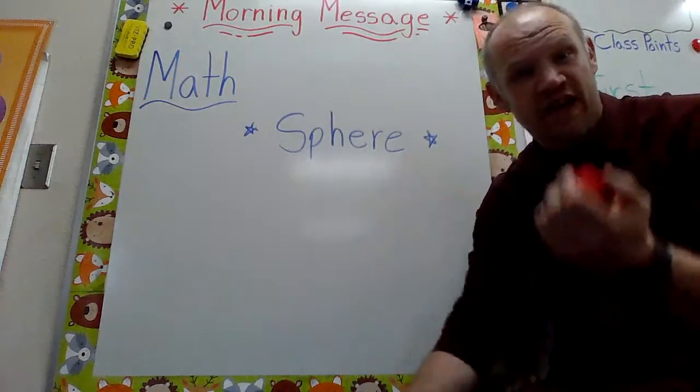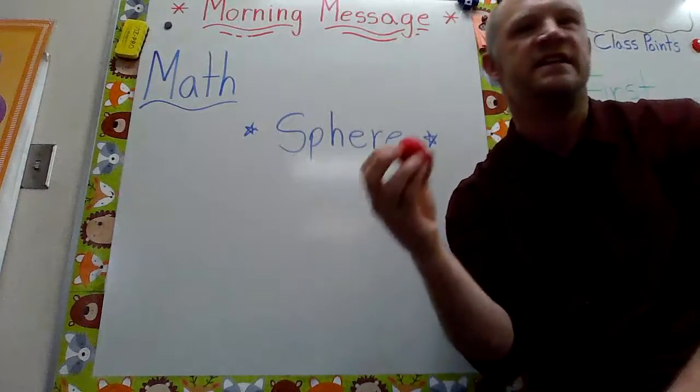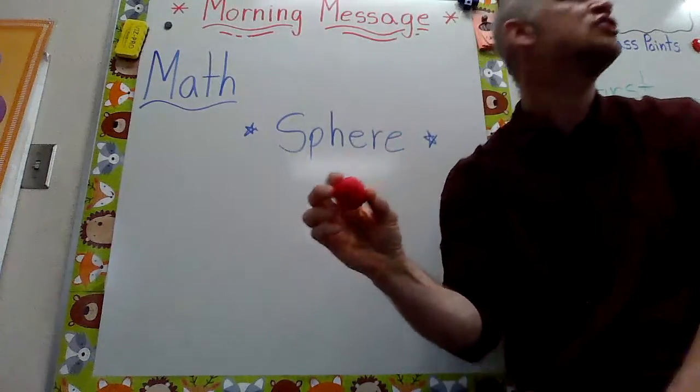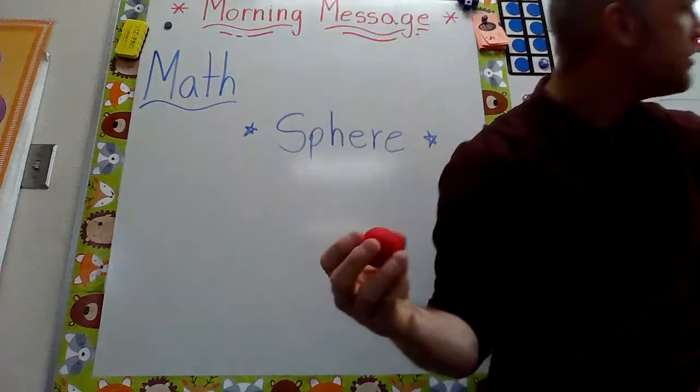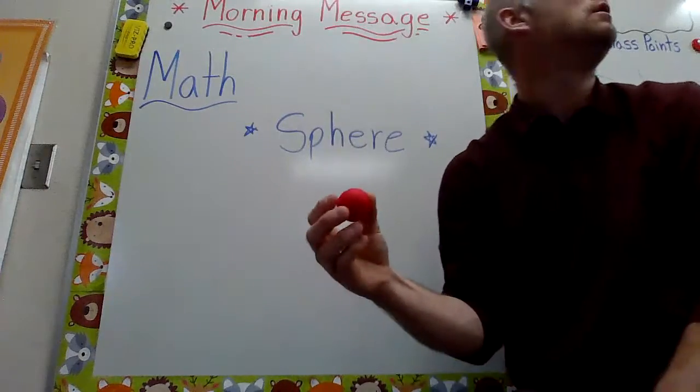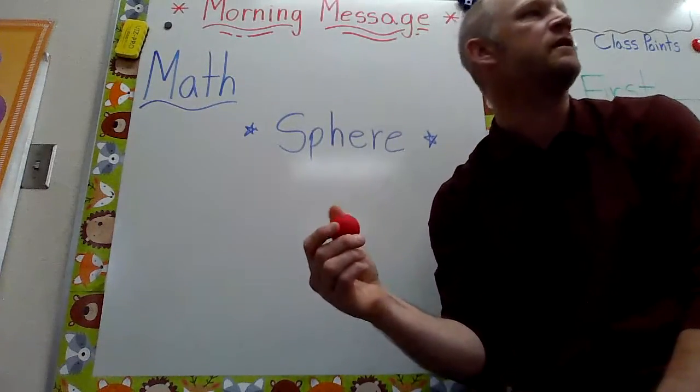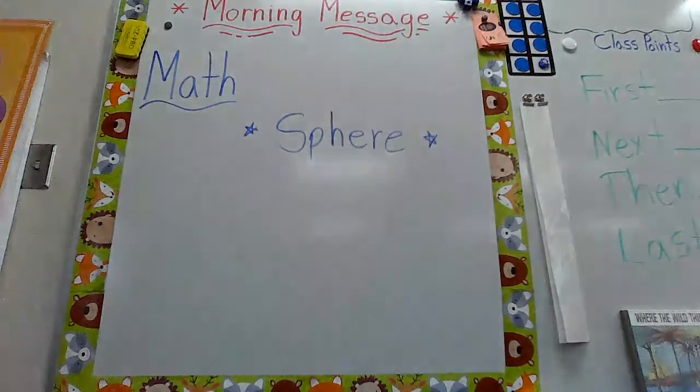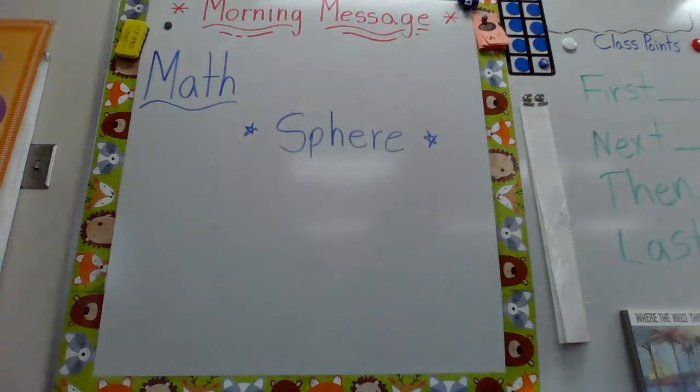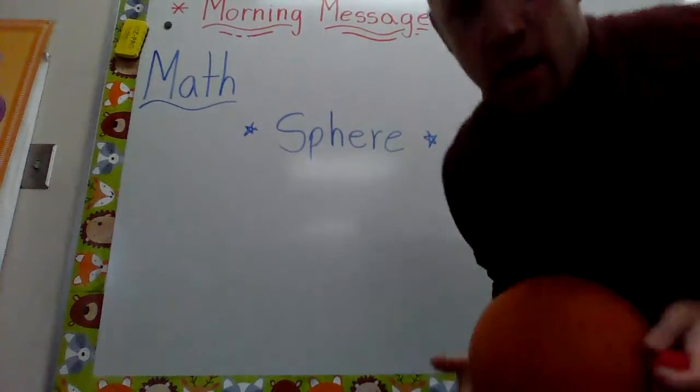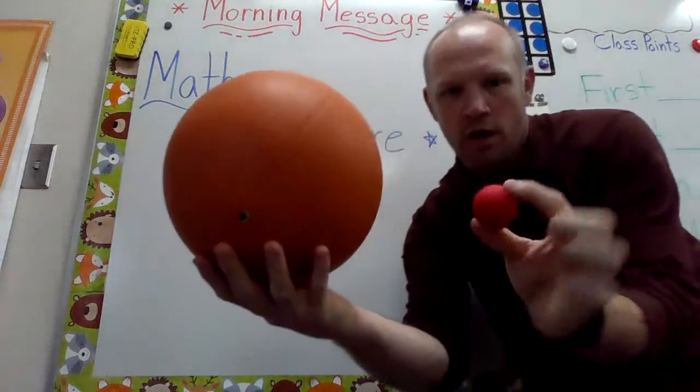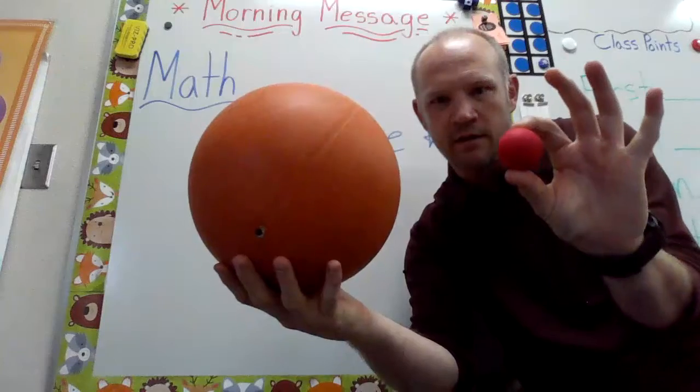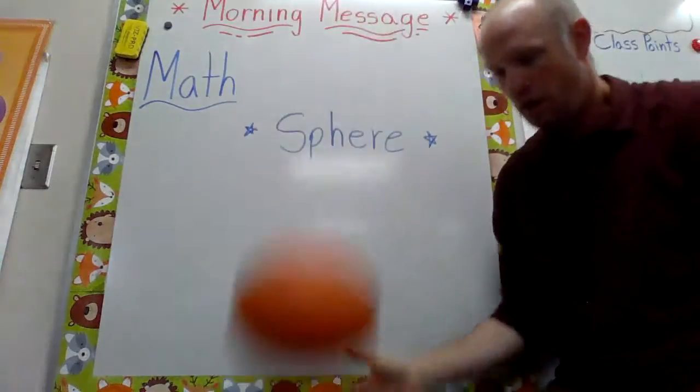Now you know what else is kind of cool about a sphere is its different shapes. So you might have a small sphere or you might have a big sphere like a basketball. They're different sizes but watch, they both bounce.